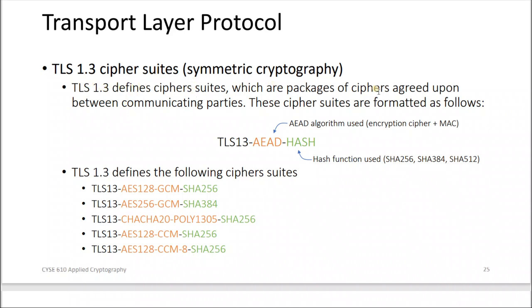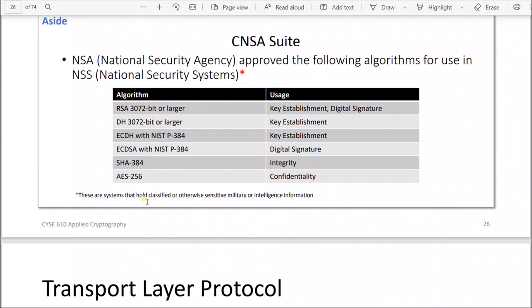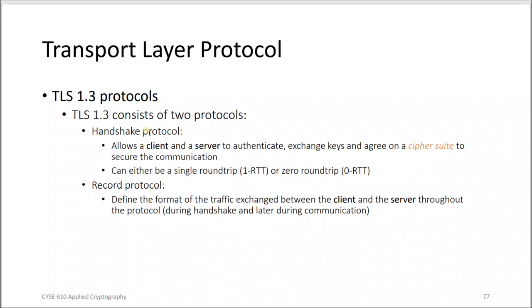TLS 1.3 defines cipher suites, which are packages of ciphers agreed upon between communicating parties. The cipher suite definition is structured as: TLS, then the AEAD algorithm, then the hash function — for example TLS_AES_256_GCM_SHA256. The best choice is AES-256 because it has a larger key size.